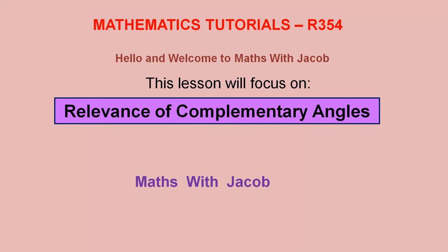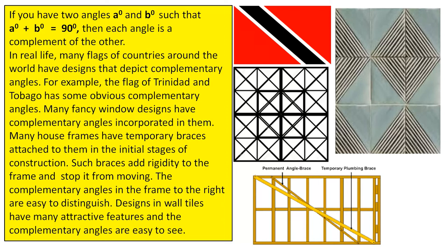Hello and welcome to Maths with Jacob. This lesson will focus on the relevance of complementary angles. If you have two angles A degrees and B degrees, such that A degrees plus B degrees equals 90 degrees, then each angle is a complement of the other.